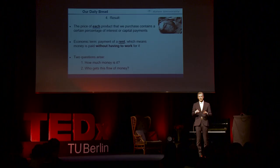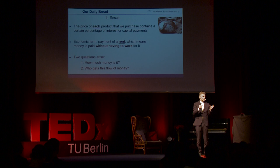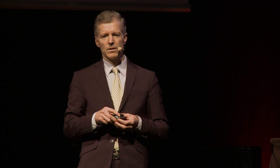The grain is sent to the mill, and the same applies to the baker. They all need land, they need capital goods which can be financed by a bank or by equity, and the workforce. So in the end, every product and every service that we purchase has a certain percentage of capital payments contained in the price. The economic term for this is a rent payment, which means money is paid for something without having to work for it.